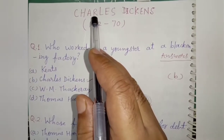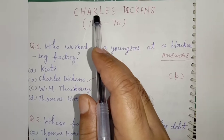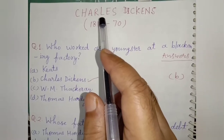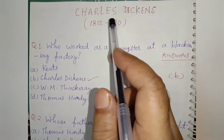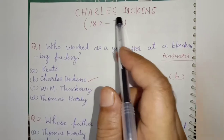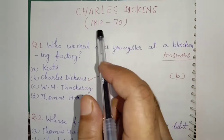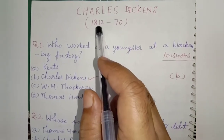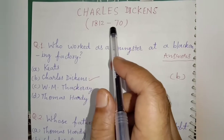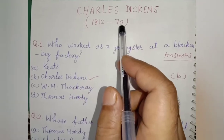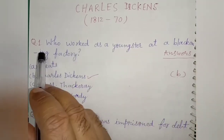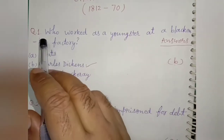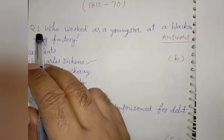Today I am going to give certain objective type questions on Charles Dickens, who was born in 1812 and died in 1870. These are objective type questions.